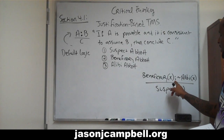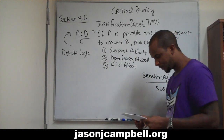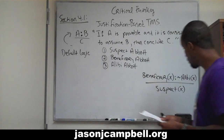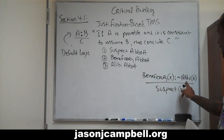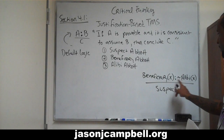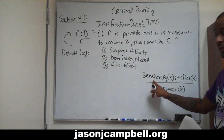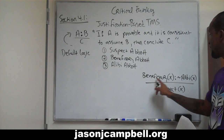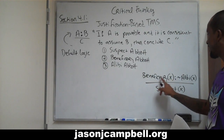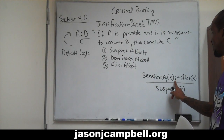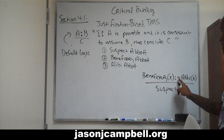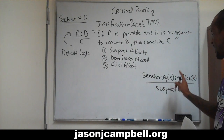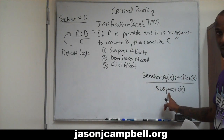It is consistent to assume that X has no alibi. So if X is the beneficiary — if it is provable that X is the beneficiary, and it is consistent to assume that that person has no alibi — then you have to conclude that X is a suspect.